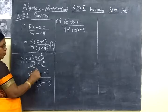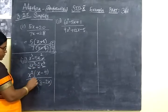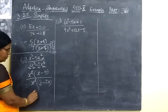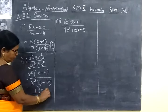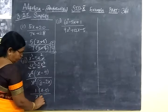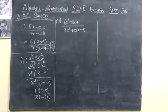Here x cube common, so take x cube outside. So 3 minus 2x. So this and this cancel. So 1 by x, numerator x minus 5 by 3 minus 2x. So now which is the answer for that?